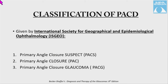Classification of primary angle closure disease, as given by the International Society of Geographic and Epidemiological Ophthalmology, is divided into primary angle closure suspect, primary angle closure, and primary angle closure glaucoma.